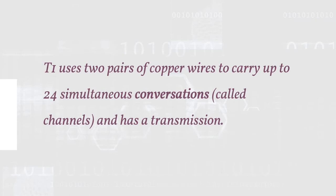Organizations often use T1 or T3 lines. These are provided by their telephone company and are capable of transporting the equivalent of 24 conventional telephone lines using only two pairs of copper wires. T1 uses two pairs of copper wires to carry 24 simultaneous conversations, called channels, and has one transmission.